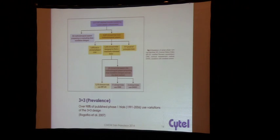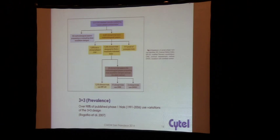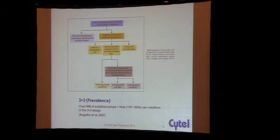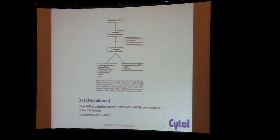There have been a few publications in the past few years looking at how much these alternative designs are used — because some alternatives like the continual reassessment method were proposed 25 to 30 years ago. Between 1991 and 2006, about 98% of published Phase 1 trials used 3+3, showing very little uptake on these other methods. A similar study looking at Phase 1 trials between 2007 and 2008 found 96% were using some kind of variation of 3+3.